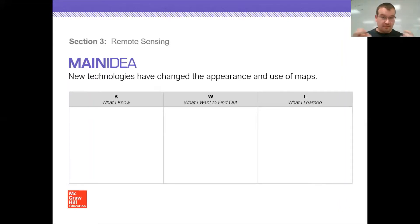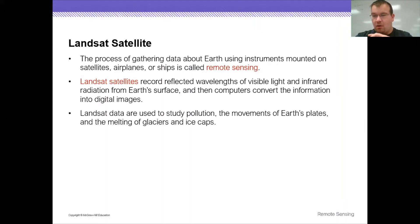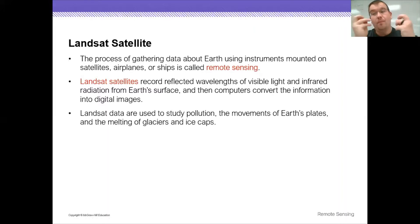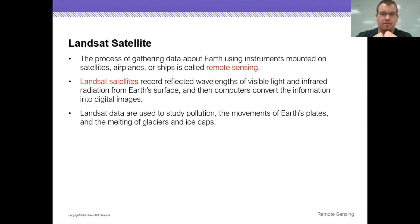We're going to talk about remote sensing — you guys have already got an idea of that, like radar and stuff. With remote sensing, the first thing we're talking about is Landsat satellites. This is the process of gathering data from Earth using instruments on satellites, airplanes, ships — remote sensing in general. We can pull that data and it gives us a better three-dimensional picture. These can record reflected wavelengths of visible light and infrared radiation from Earth's surface, and then computers can convert that into digital images.